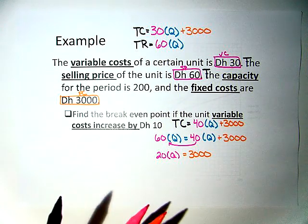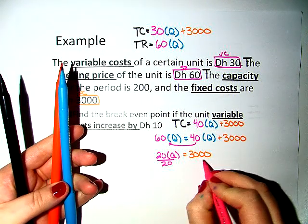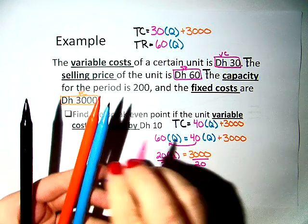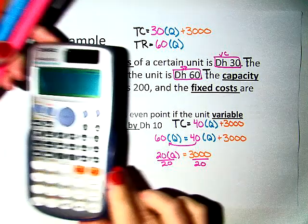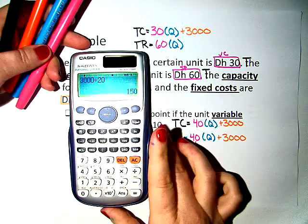So to solve for Q, we divide both sides by 20. We'll get out our calculator for that. 3,000 divided by 20 equals 150.